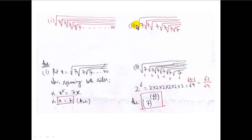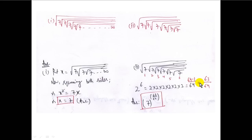In the second case, a finite number of 7s are there. First put 2, then count how many 7s are there: 1, 2, 3, 4, 5, 6 — there are 6 sevens. So put 2 to the power 6, that is 2 multiplied 6 times, giving 64. The answer is 64 minus 1 upon 64, which is 63 upon 64.